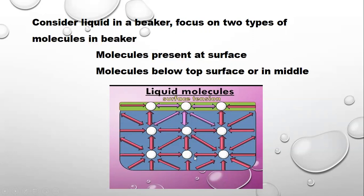If we consider this molecule, these arrows are showing the force of attraction. This molecule is experiencing a right force and left force which are equal in magnitude and opposite in direction. Similarly, an upward force and a downward force. These four forces are equal in magnitude and opposite in direction, so they cancel the effect of each other and the resultant force on this molecule is zero. When we consider a molecule on the surface of the liquid, it experiences a right force and left force which are equal and opposite, so they cancel each other.